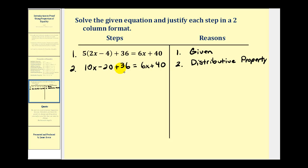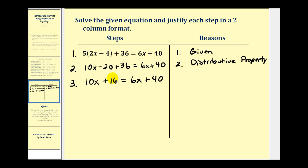The next step would be to combine the like terms. So let's go ahead and do that — that'll be step three. We'll have 10x plus 16 equals 6x plus 40. The justification or reason would be combining like terms.